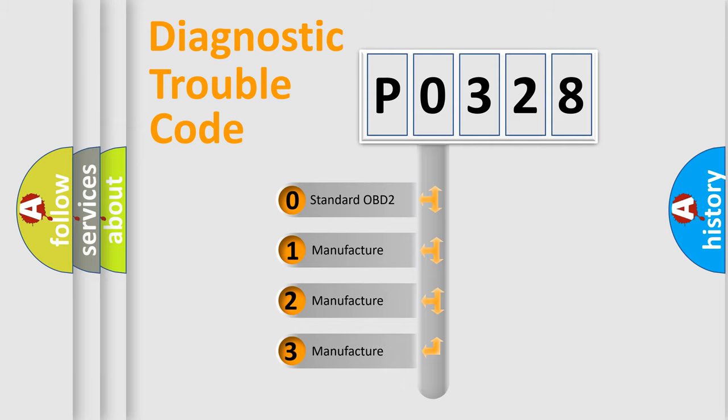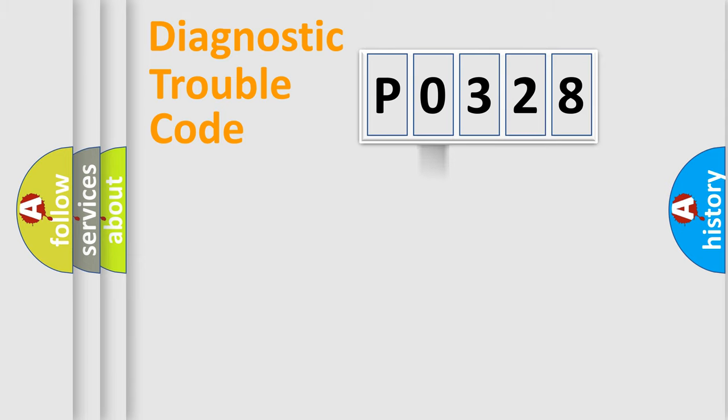If the second character is expressed as zero, it is a standardized error. In the case of numbers 1, 2, 3, it is a more prestigious expression of the car-specific error.